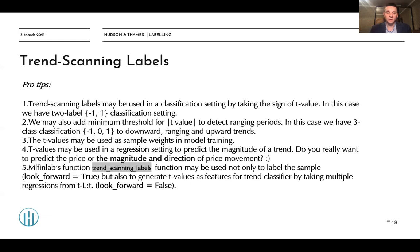So t-values are great proxies to direction and the magnitude of that. Actually, the ML FinLab function may also be used not only to label the sample (in this case your default value of parameter look_forward equals true) but also to generate t-values as features for a trend classifier by taking multiple backward-looking regressions. In this case, your look_forward parameter should equal false.